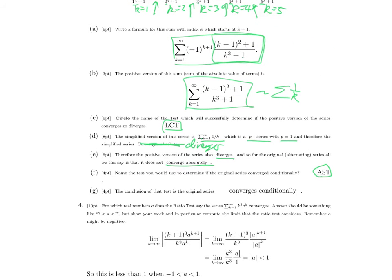This positive version is eventually decreasing. In fact, it is, I think, decreasing the whole way. And it approaches zero, of course. So this is conditionally convergent.